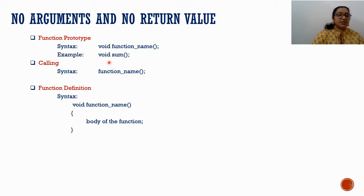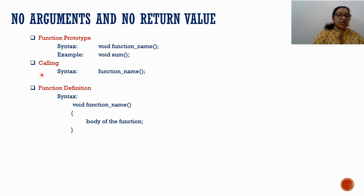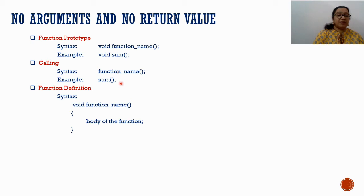The calling statement syntax is: function name, empty bracket, semicolon. Empty brackets mean there is no argument list. For example, to call the sum function: sum(); — just the function name, empty bracket, and semicolon.